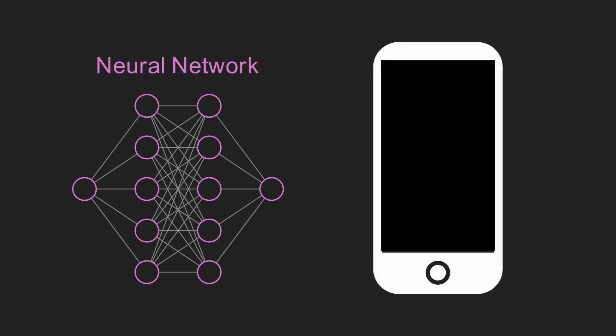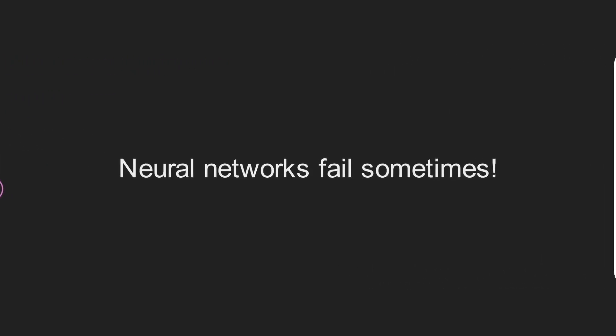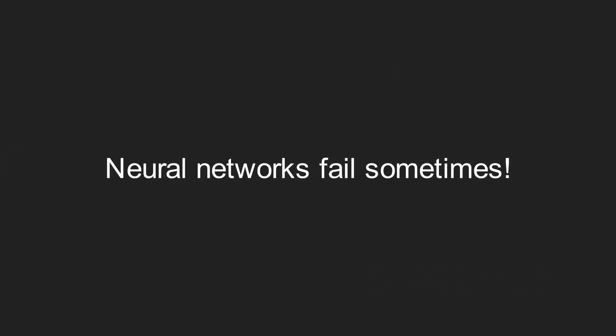For example, we can now just search a word in the Photos app on our smartphones and find all of the related images. However, neural networks aren't perfect, and sometimes they fail at their task.